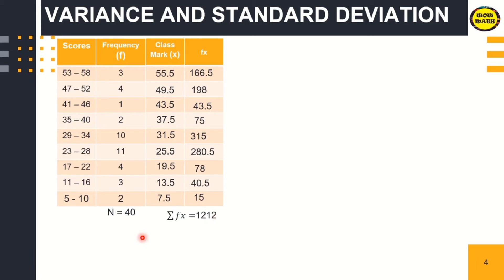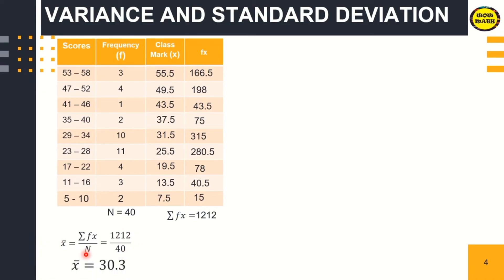The summation of fx is important in solving for the mean. The formula is: mean equals the summation of f times x over n. Our summation of fx is 1,212 divided by n which is 40. Therefore, our mean value is 30.3. Now we are going to use the mean value because the next column we need to complete is x minus the mean, or the class mark minus the mean, then squared.